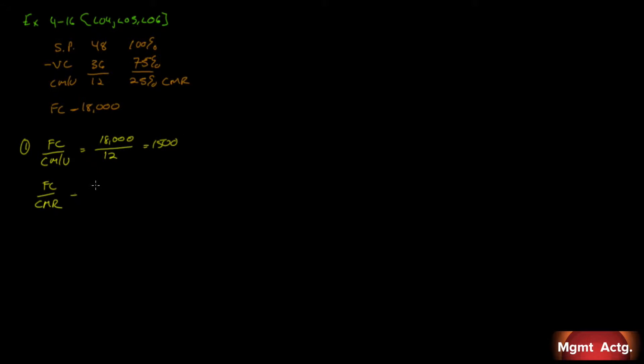The other way of thinking of that is, if our fixed costs are $18,000 and we get to keep $0.25 of every dollar of sales, divide that by 0.25, we would need $72,000 in sales. If we keep $0.25 of every dollar, that means we keep $18,000. Our fixed costs are $18,000. We breakeven. Easy peasy.